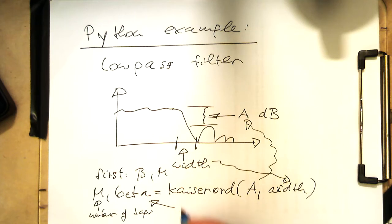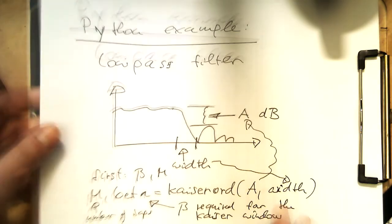And this is our beta required for the Kaiser window. And remember, alpha is just basically half of M.